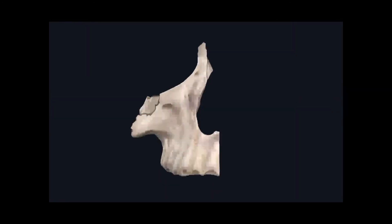This right here is the right maxilla. When you have two maxillas together it's called maxillae — maxilla is singular, maxillae is plural with the 'e'. We're going to learn four different landmarks found on each maxilla. Starting with the first landmark on the inferior aspect of the maxilla, we have these sockets where your teeth reside, called dental alveoli of the maxilla. That's where all your superior teeth sit.